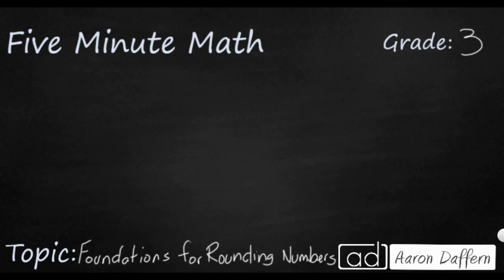Some of you might have already learned a trick about rounding numbers. Something that says if it's five or more, the number goes up, and if it's four or less, the number stays the same. But why does that work?